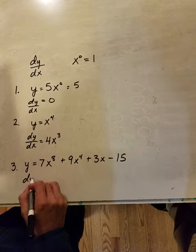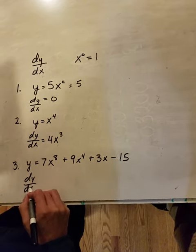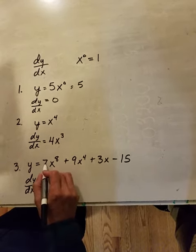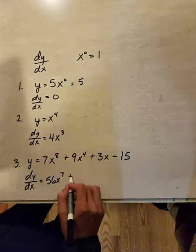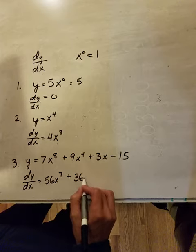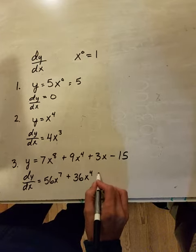So dy dx. We take 8 times 7, that's 56, times x to the 7th, plus 36x to the 4th, plus,